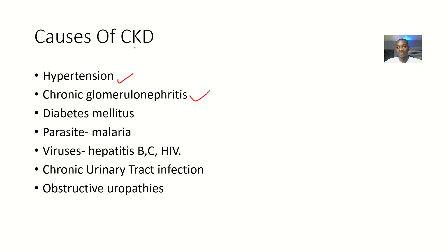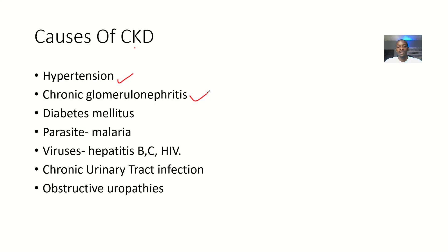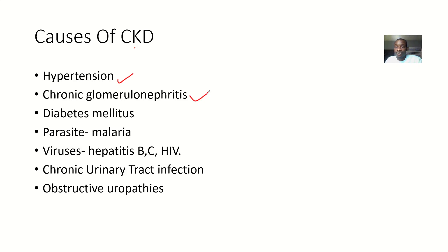Glomerulonephritis is inflammation of the glomerulus. The glomerulus acts like a filter that repels proteins and blood back. If the filter has a problem, you now have an influx of blood and proteins into the urine, which is usually a problem.